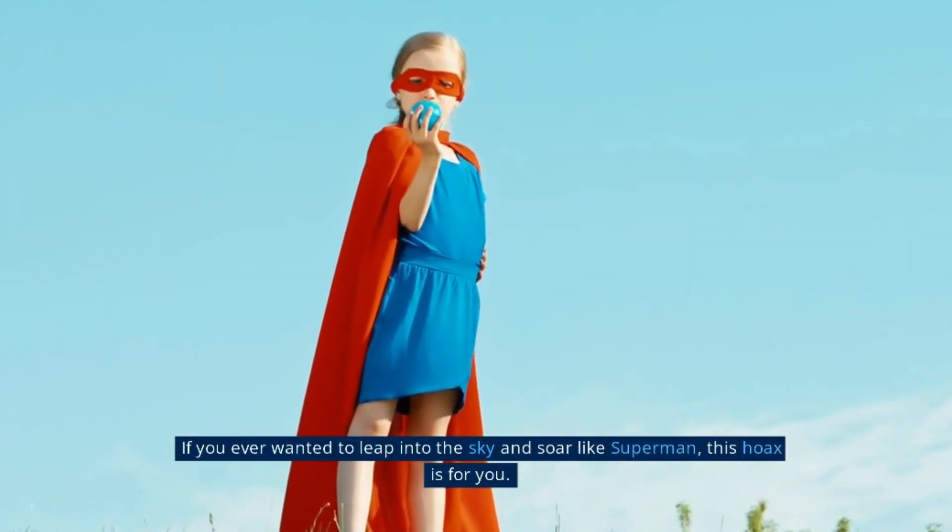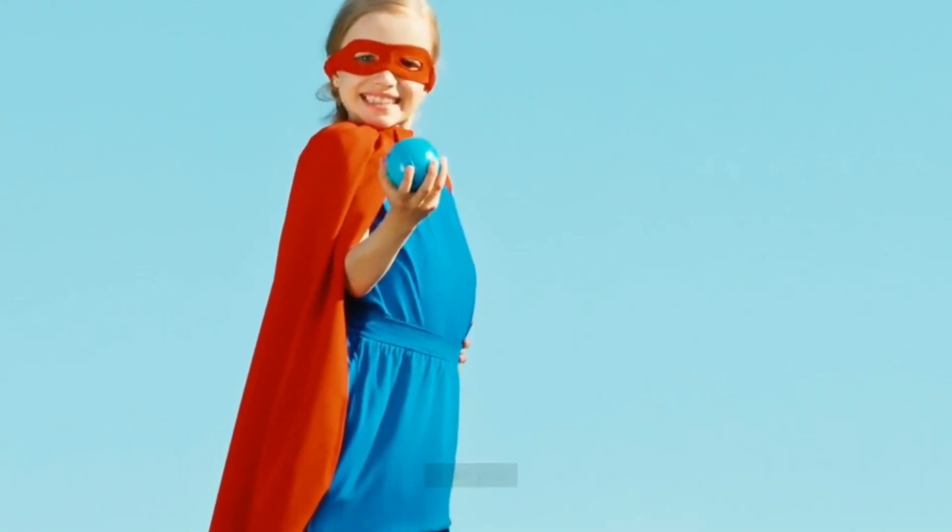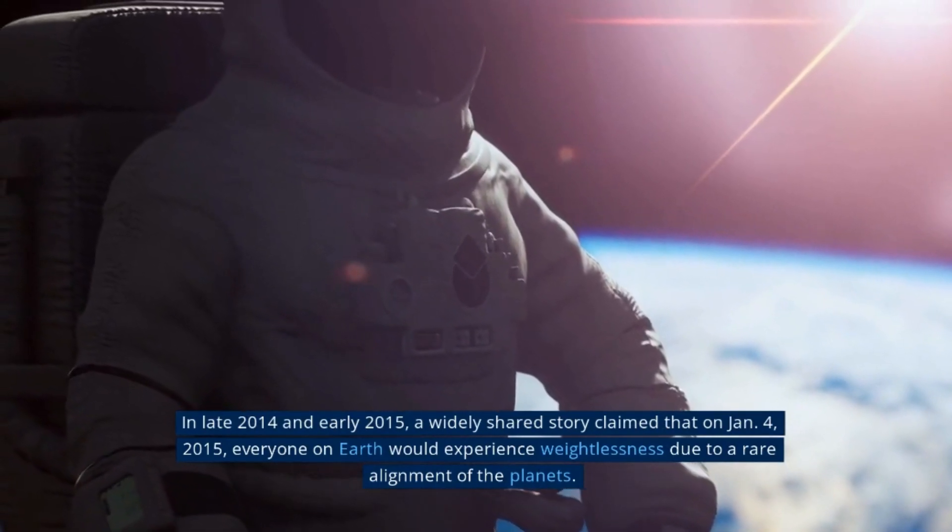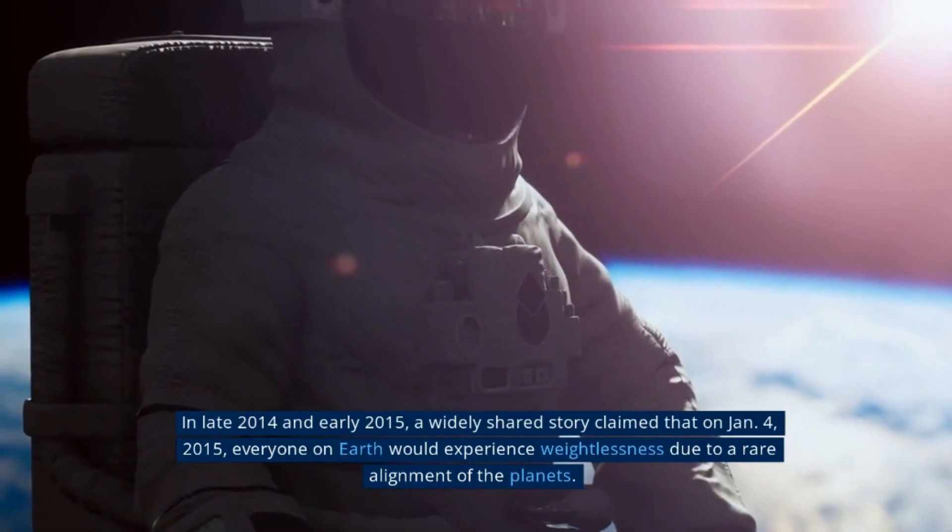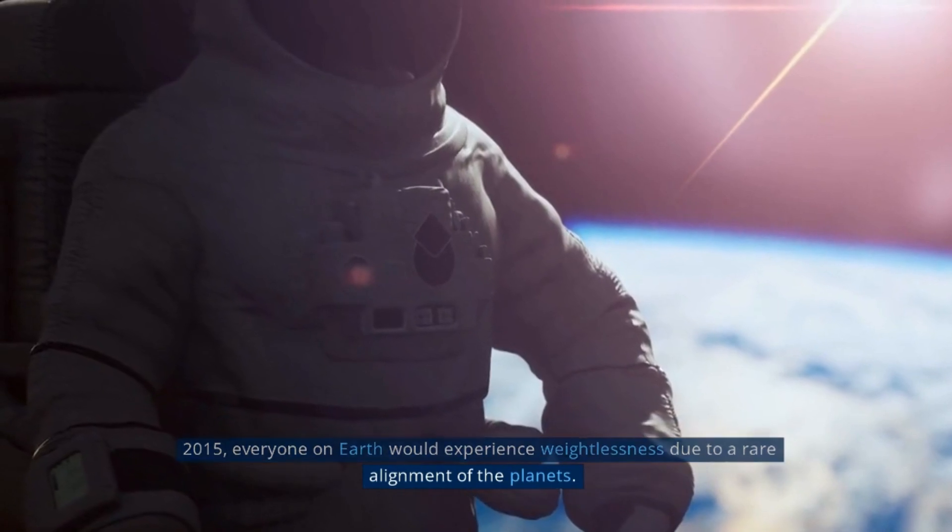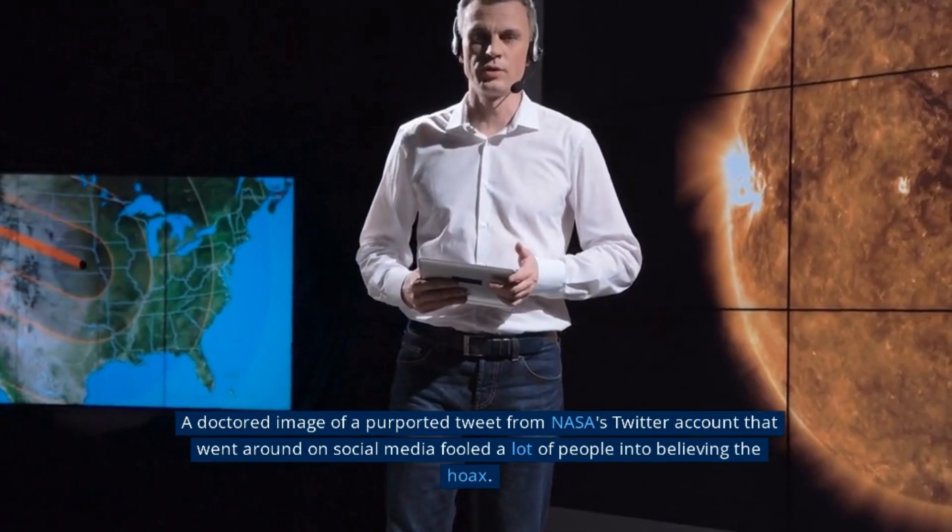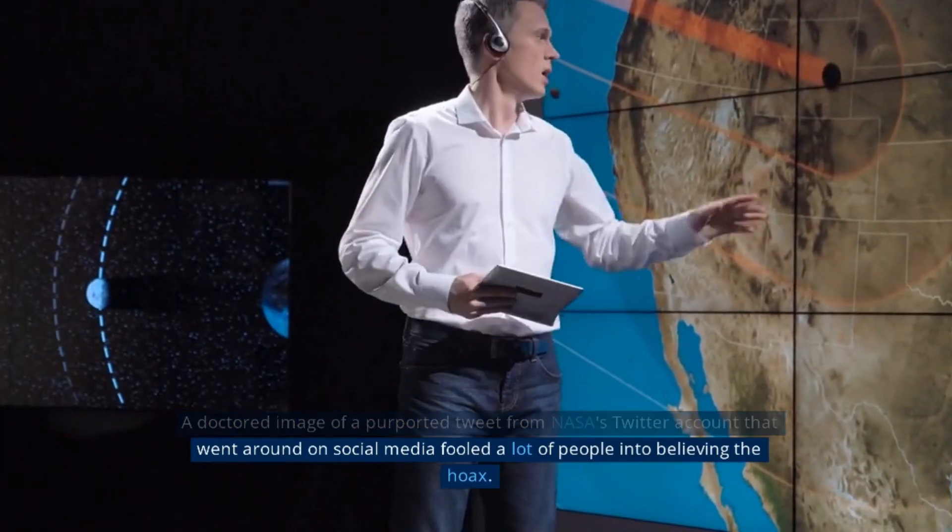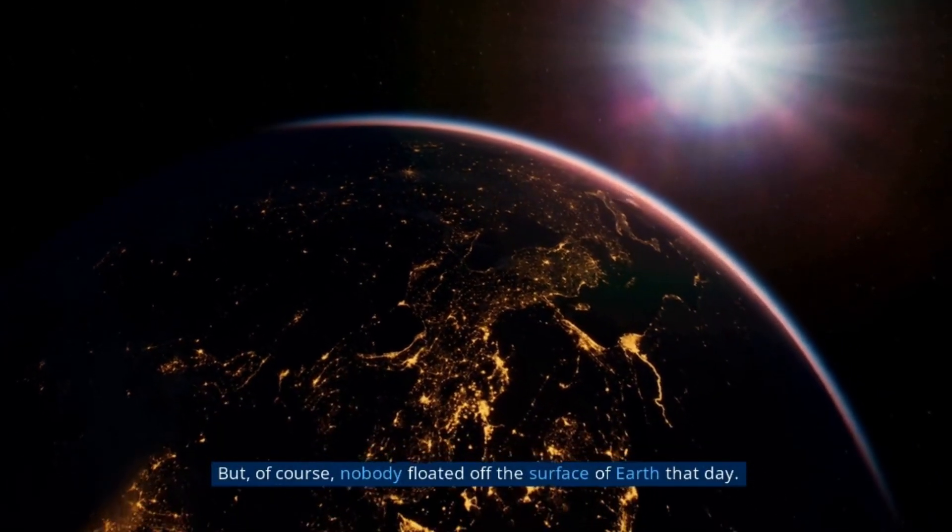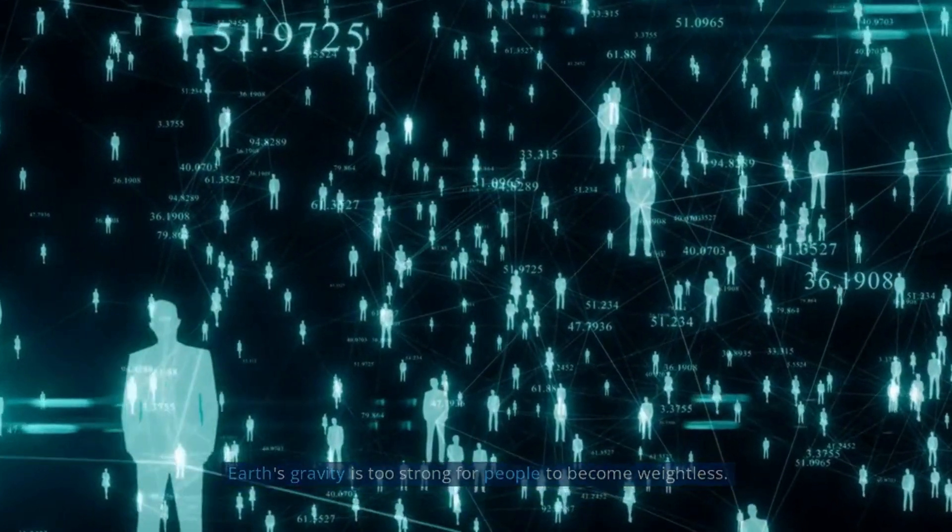If you ever wanted to leap into the sky and soar like Superman, this hoax is for you. In late 2014 and early 2015, a widely shared story claimed that on January 4, 2015, everyone on Earth would experience weightlessness due to a rare alignment of the planets. A doctored image of a purported tweet from NASA's Twitter account that went around on social media fooled a lot of people into believing the hoax. But of course, nobody floated off the surface of Earth that day. Earth's gravity is too strong for people to become weightless.